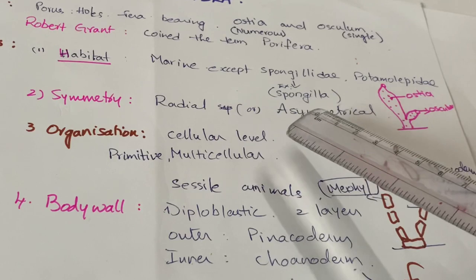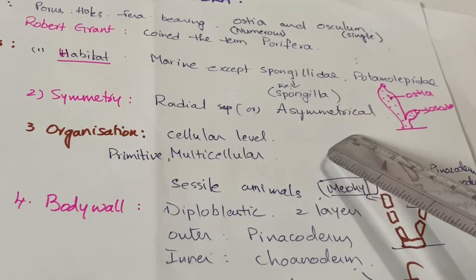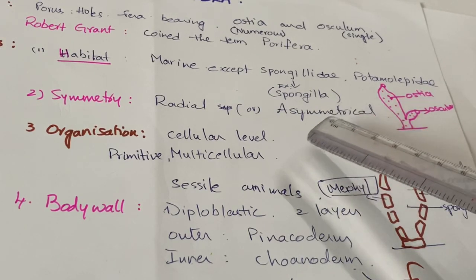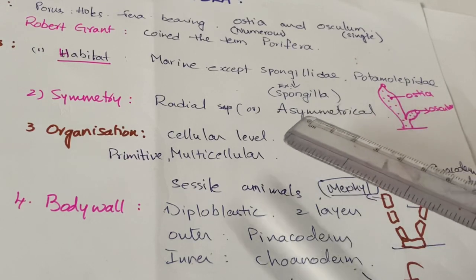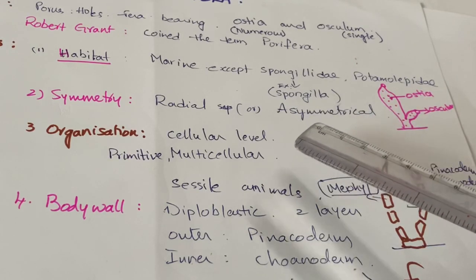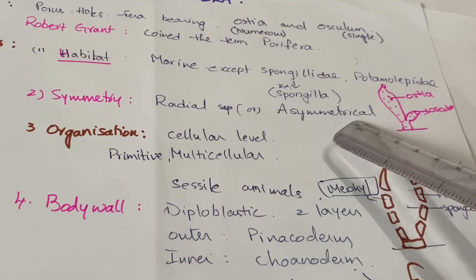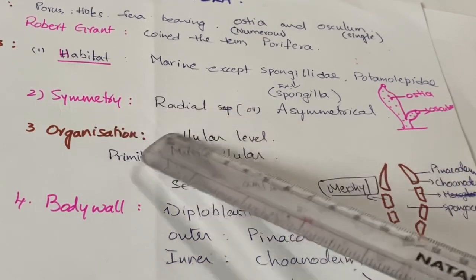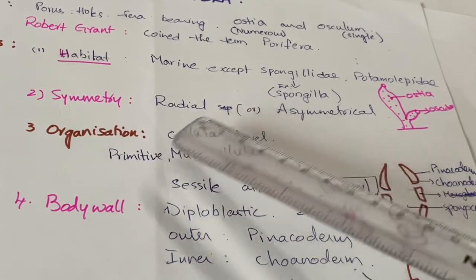Some Porifera are asymmetrical — this is the condition in which we cannot cut the animal into equal halves in any plane. Mostly, though, sponges show radial symmetry.